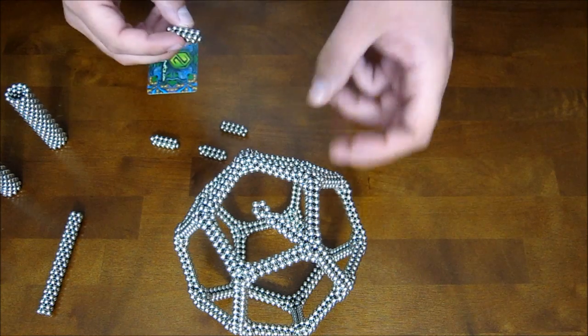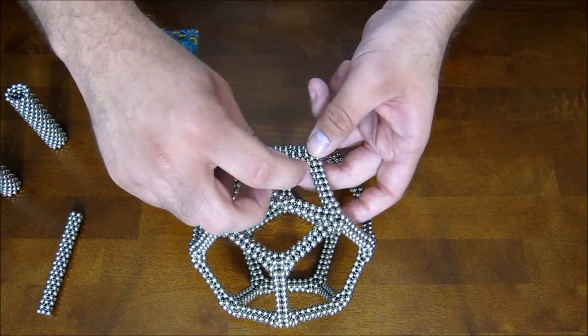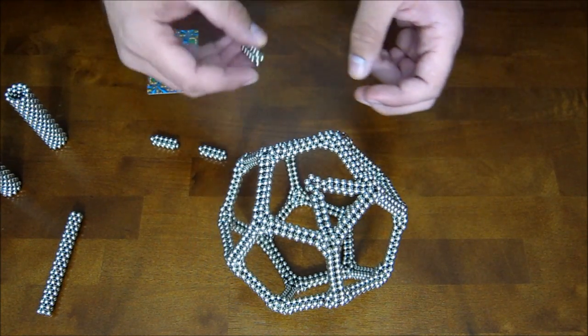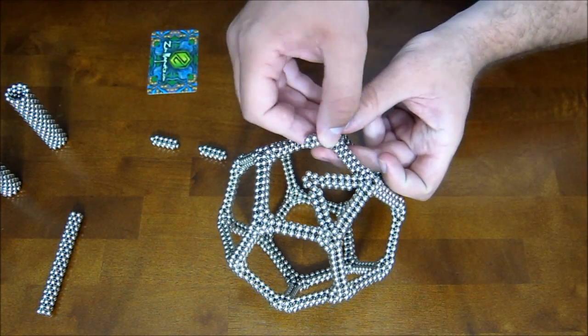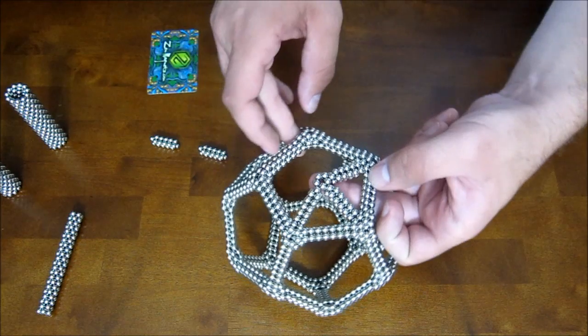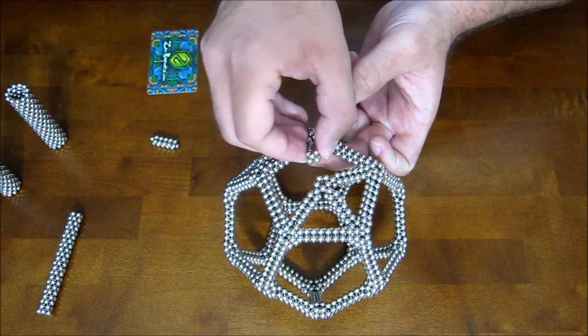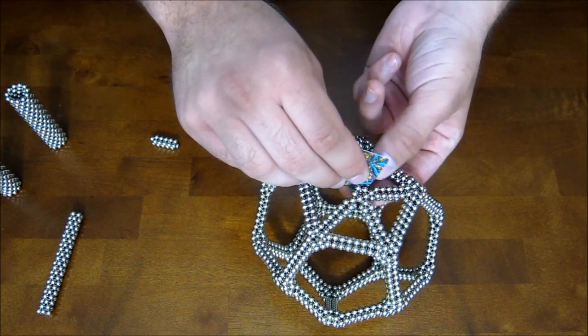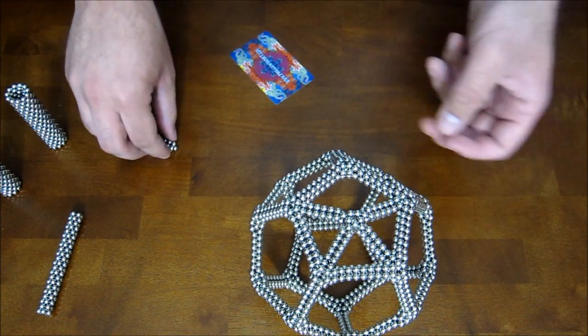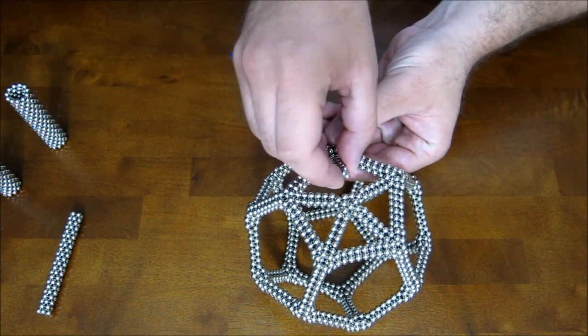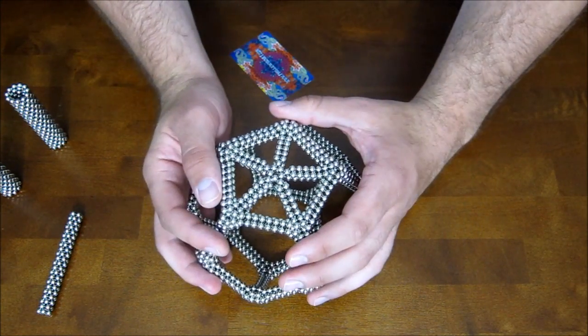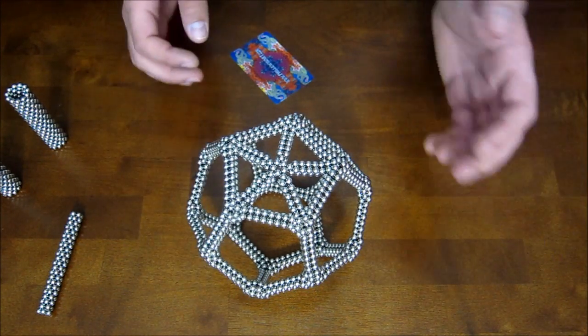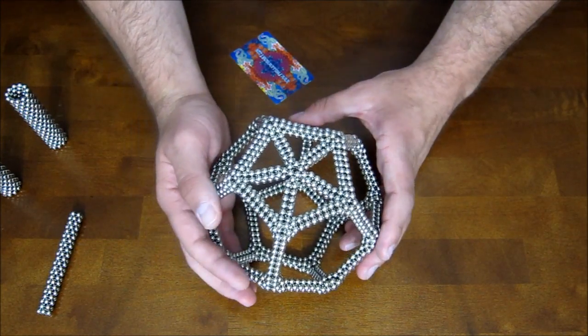And then you add the four more and hook them under, and then attach them to this thing after they've been hooked under. It's what I've found to be the easiest way to do this shape. And it doesn't always want to go right off the bat but you can get it to go. And that is one face. And now you want to do the same thing essentially on the other eleven faces.